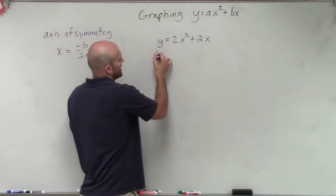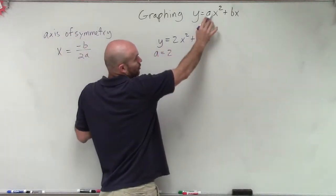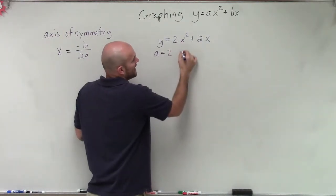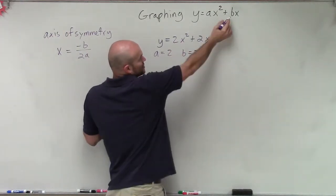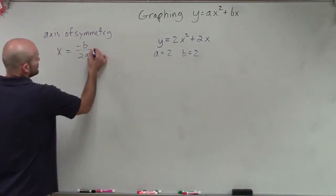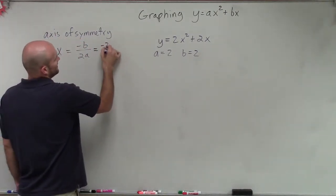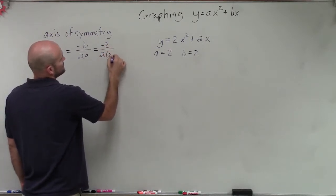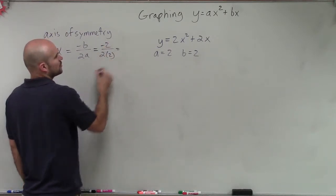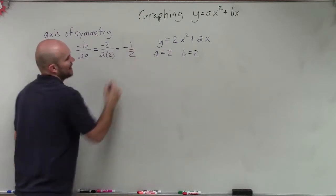In this case, I have my a equals 2, which is the coefficient of my quadratic term. And then my b is equal to 2, which is the coefficient of my linear term. So therefore, I have negative 2 divided by 2 times 2, which equals negative 2 over 4, which equals negative 1 half.